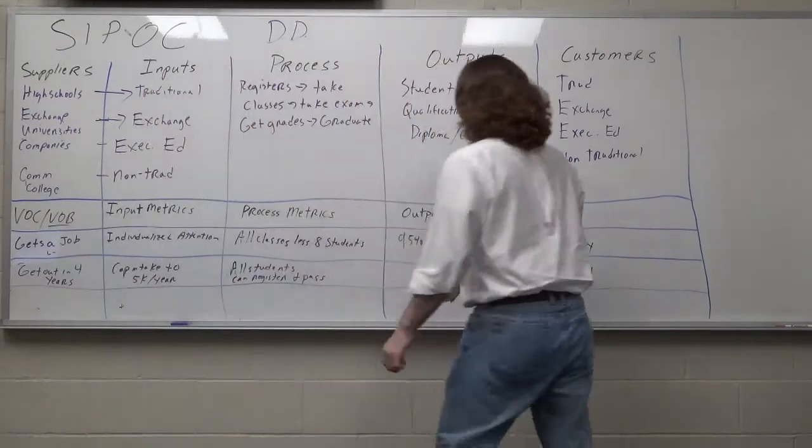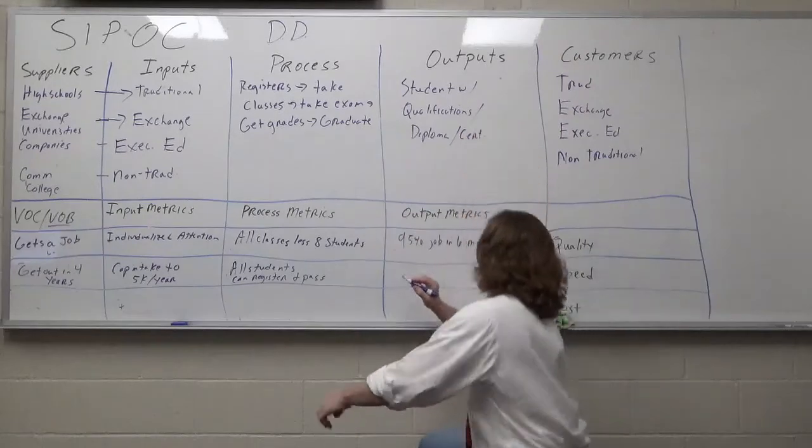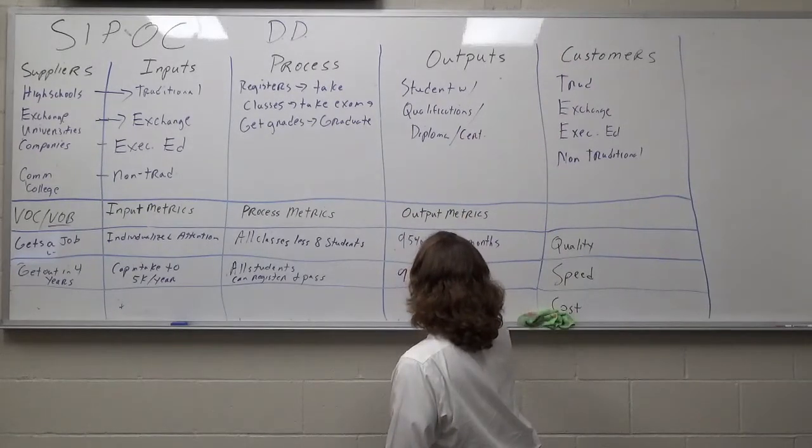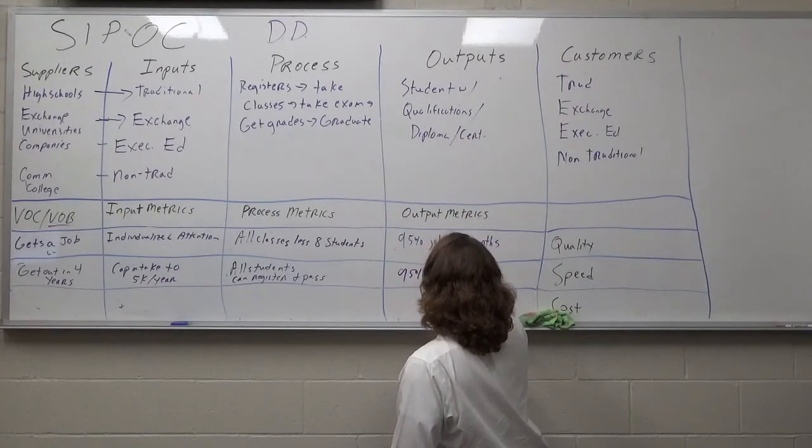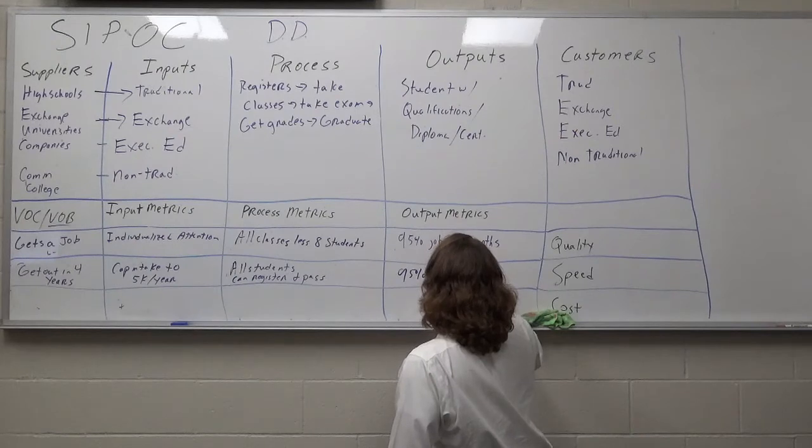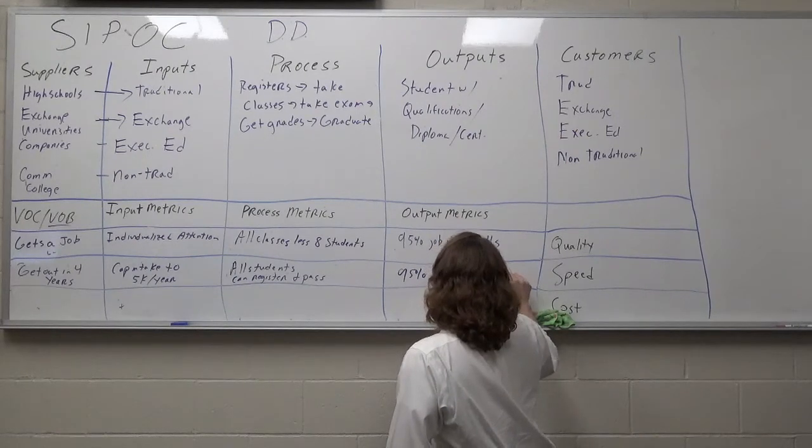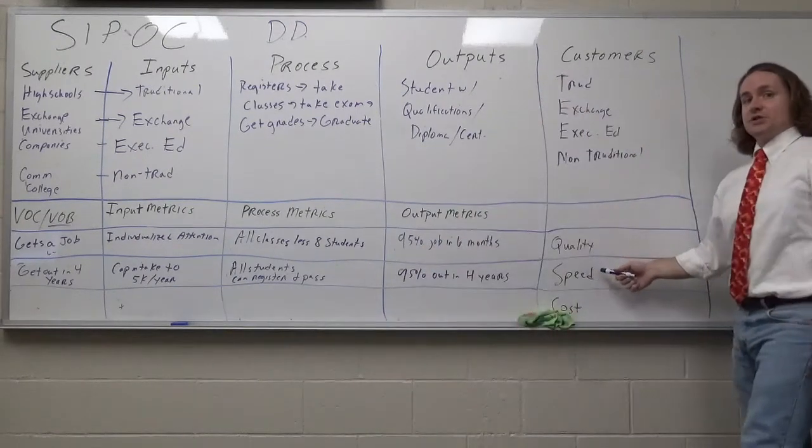Maybe register and pass. Output metric, 95% get out in four years. And there's your speed.